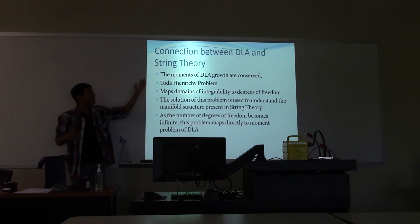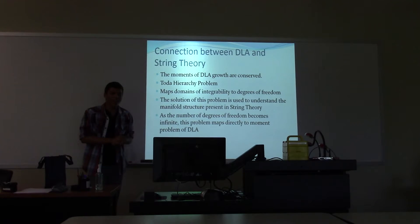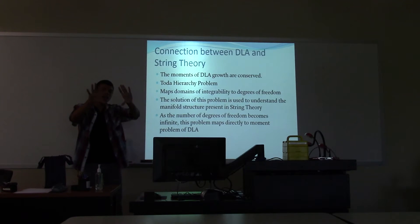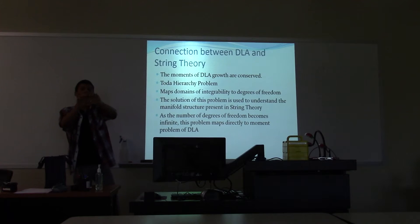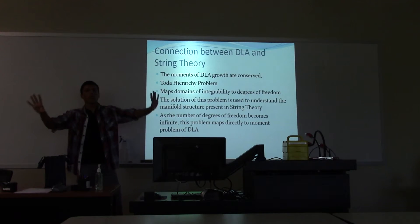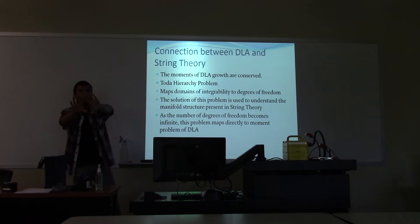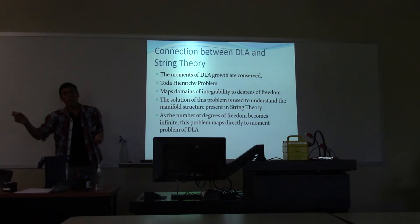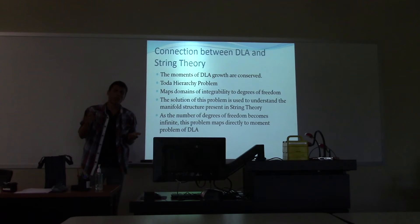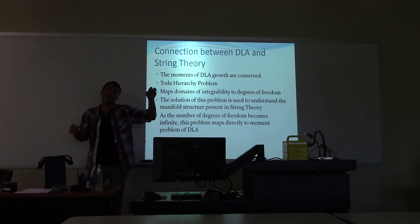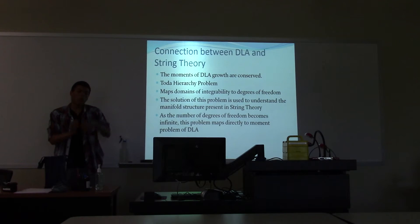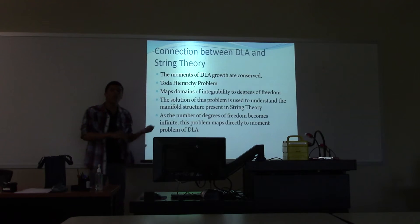There's also a connection between DLA and string theory. DLA has a center of mass — a balance point — and as it grows, the center of mass stays the same. The branches grow out but the center of mass isn't moving because it's fixed. What's cool is that the moments, or branching structure, of the DLA are conserved: if you have branches growing out at a fast rate on one side, the branches on the other side also have to grow at the same rate, because the total symmetry of the DLA must be conserved.